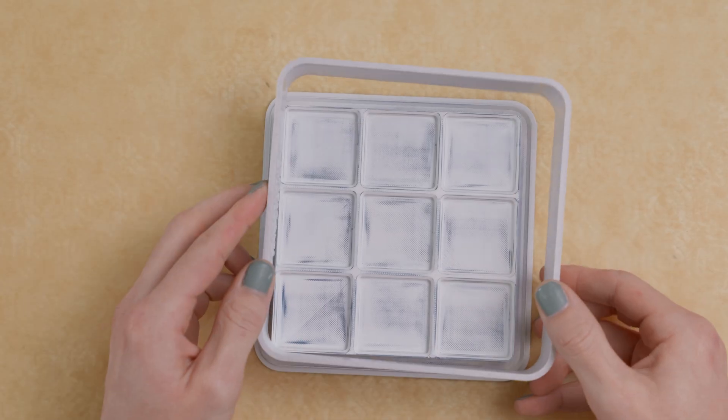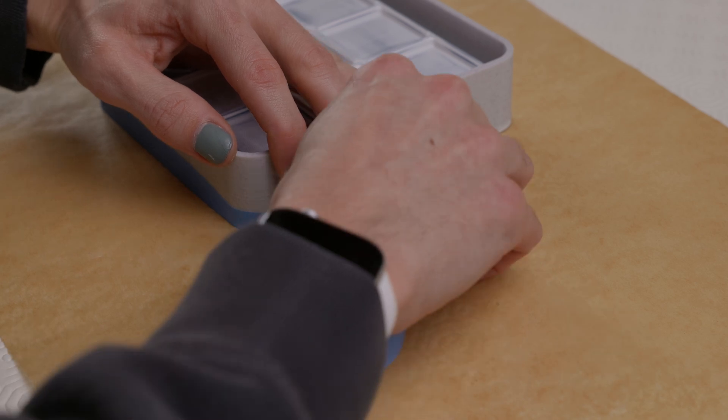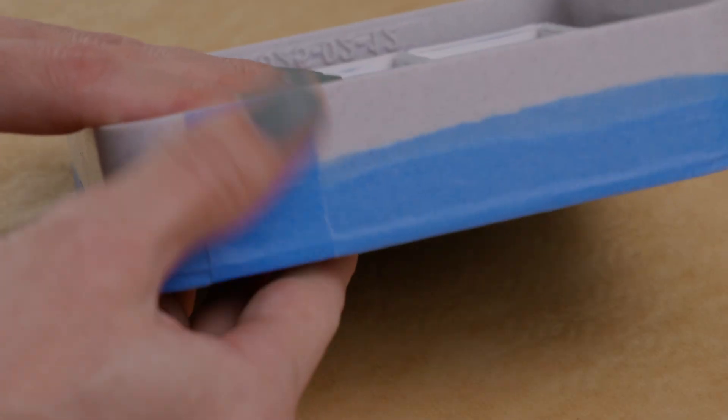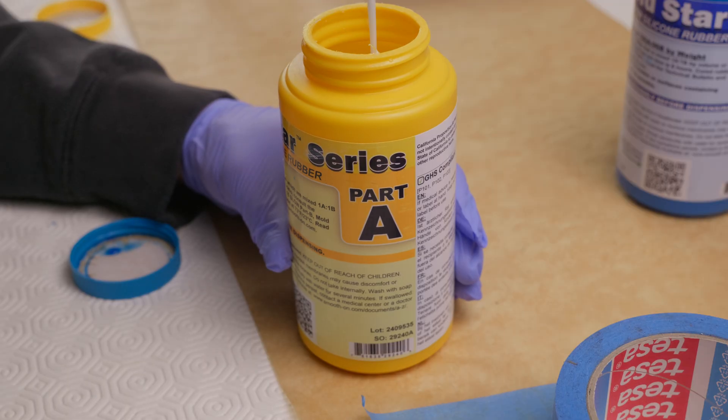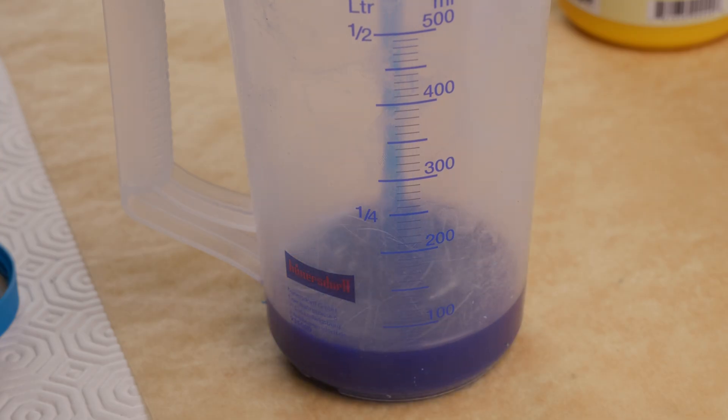Now that everything is printed and smoothed, it's time to assemble the mold box and pour the mold. I'm using a product called Moldstar 30. It's a medium hardness platinum cure silicone that does not require a vacuum chamber.